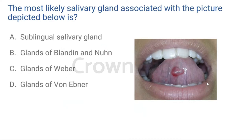Any answers? Jaydev says B and somebody called 'high dentist' says D. Good evening everyone. Jaydev has got it right. So we know that there are three pairs of major salivary glands — the parotid, submandibular, and sublingual — but we tend to not give attention to the minor salivary glands.